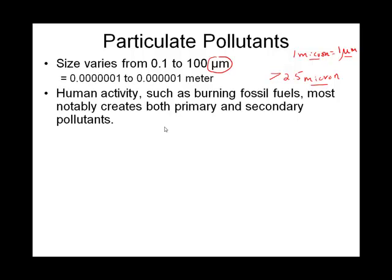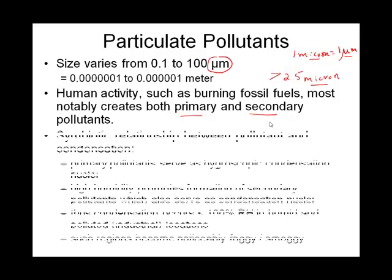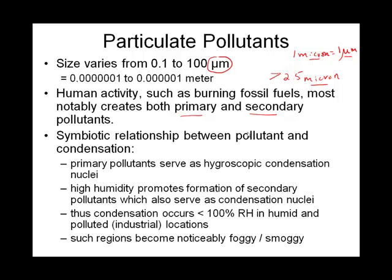Particulates can be both a primary pollutant — meaning right off the bat they are harmful to life — and they can also be a secondary pollutant, which means the particulate is interacting somehow with something else in the atmosphere and forming a pollutant.